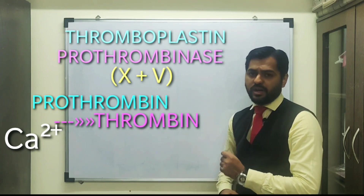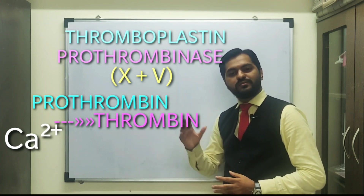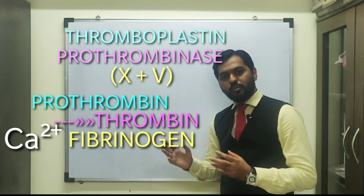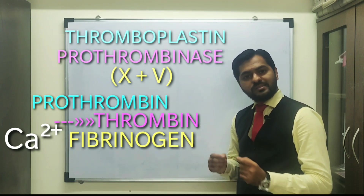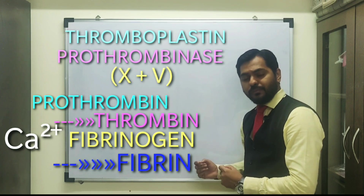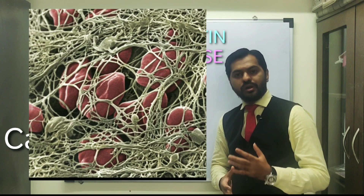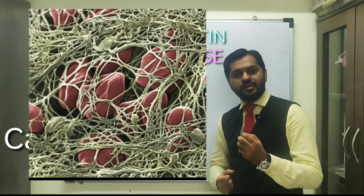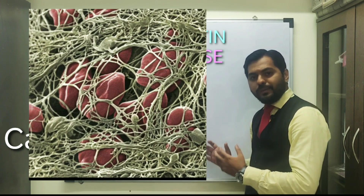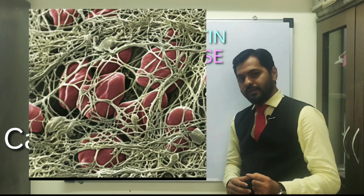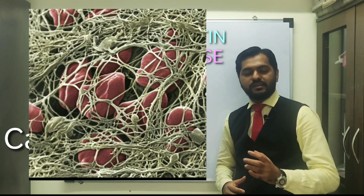The activated thrombin helps in conversion of the soluble plasma protein known as fibrinogen. That soluble fibrinogen is converted into insoluble polymers known as fibrin. This fibrin at the site of injury forms a meshwork which enmeshes the blood cells — the RBCs and the plasma — and that stops the bleeding. This fibrin meshwork is mainly stabilized by clotting factor number 13, known as fibrin stabilizing factor.